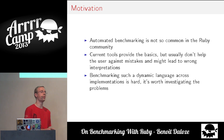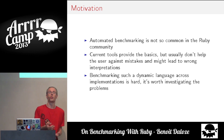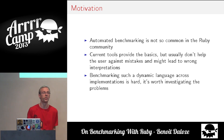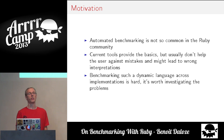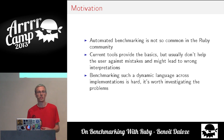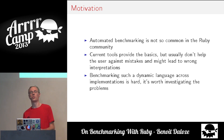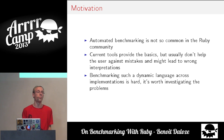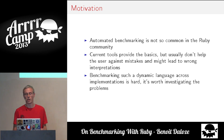My motivation: automated benchmarking is something very uncommon in Ruby — almost nobody does it, and it's very important. When you look at an interpreter, you want to know if performance degrades, or if you tried an optimization but it slowed something else down. Currently no implementation does that, or very, very little.